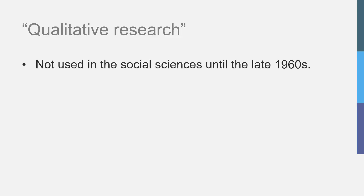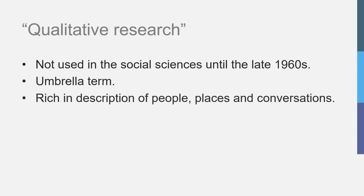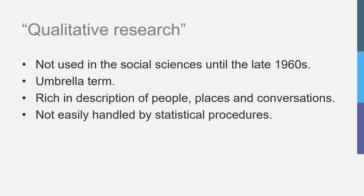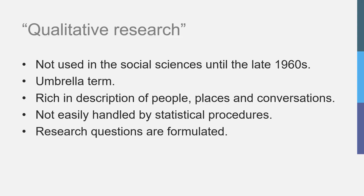We will make a start by presenting qualitative research in a nutshell. The term qualitative research was not used in the social sciences until the late 1960s. As of then, qualitative research was used as an umbrella term to refer to several research strategies that share certain characteristics. The data collected in qualitative research is rich in description of people, places and conversations and not easily handled by statistical procedures. Research questions are formulated to investigate topics in all their complexity and in context. Often, specific research questions or hypotheses are not defined. Rather, they are concerned with understanding the participant's own frame of reference to get a detailed and rich understanding of a certain phenomenon.